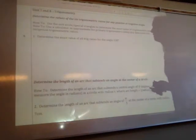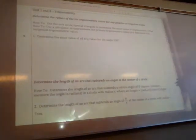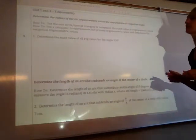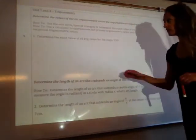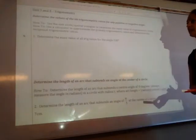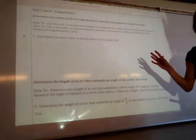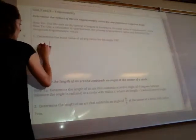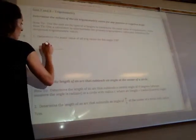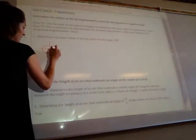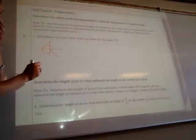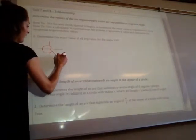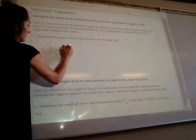Also how to use your calculator to approximate the primary trig ratios and determine the reciprocal trig ratios. So, number one, determine the exact value of all trig ratios for the angle 330 degrees. So what you want to do is first figure out where does 330 degrees terminate? Well, it will be in quadrant 4, and that leaves us with a special triangle.